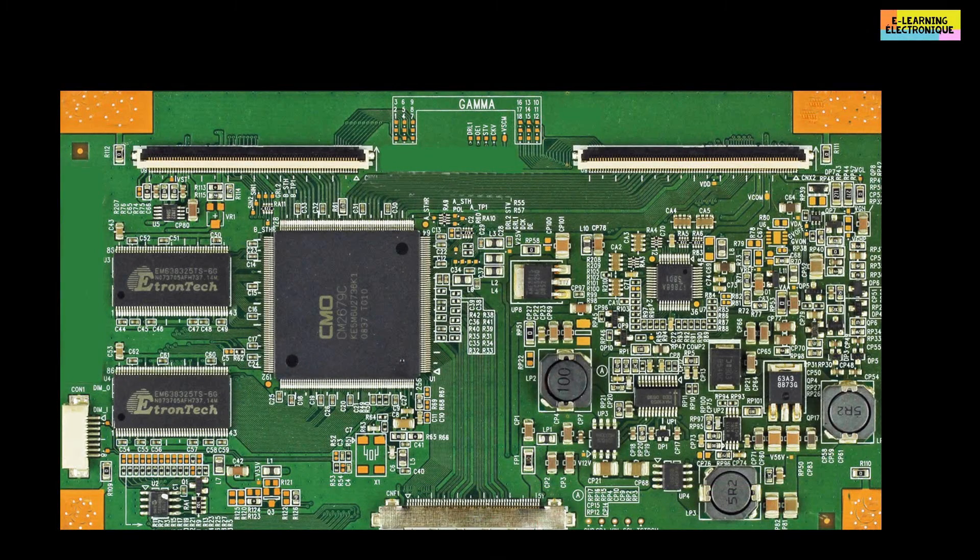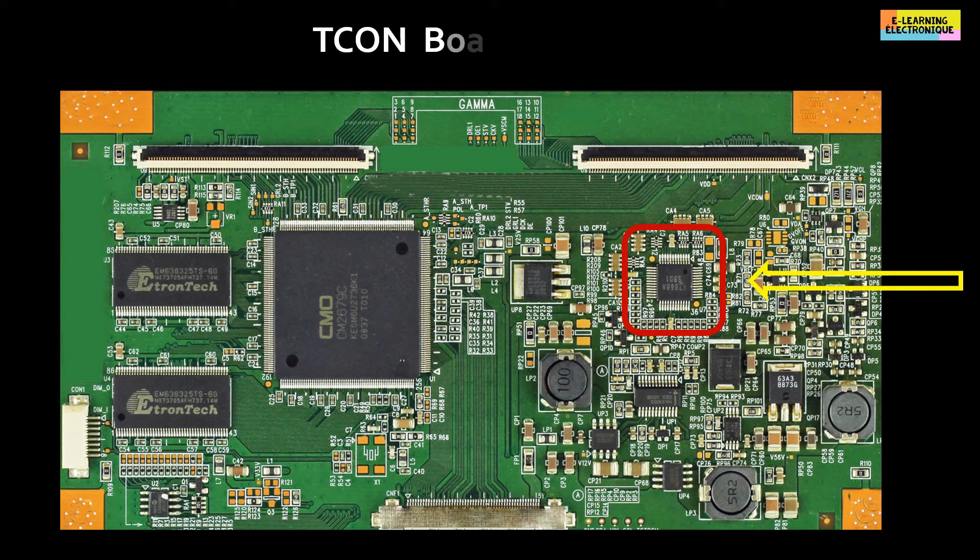Hello. In the previous episode we saw the principle of using the gamma correction. This time, we will see the electronics of the gamma chip found in the T-Con board of the LCD TV.